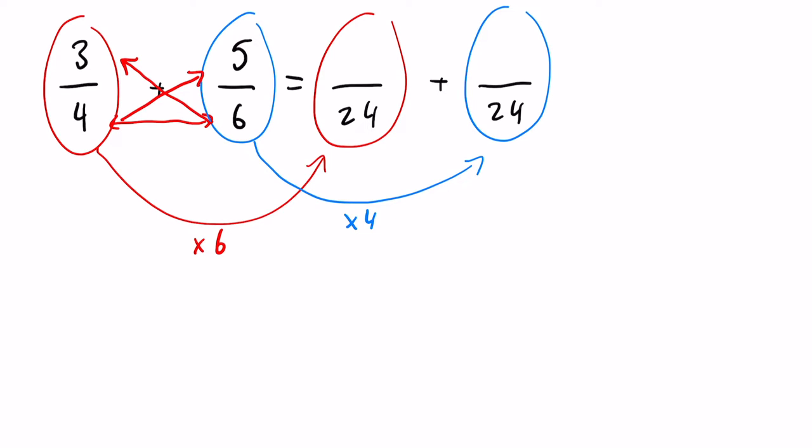So six times four made 24, and six times three made 18, so that can go up there. Likewise with the other fraction, four times five will make 20.